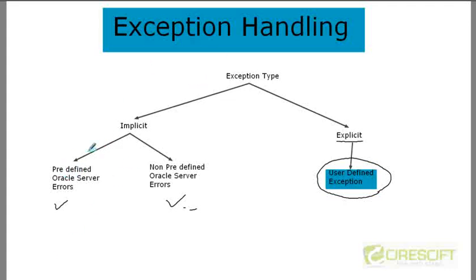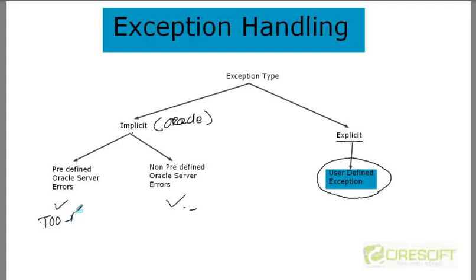Let's do a quick summary of exception handling. We have two types: one is implicit, where Oracle will automatically raise the exception without you doing anything. Within implicit exceptions, there are two types. First, predefined Oracle server errors — these are frequently occurring errors for which Oracle has already declared an exception and will raise it automatically. You just need to handle it properly.